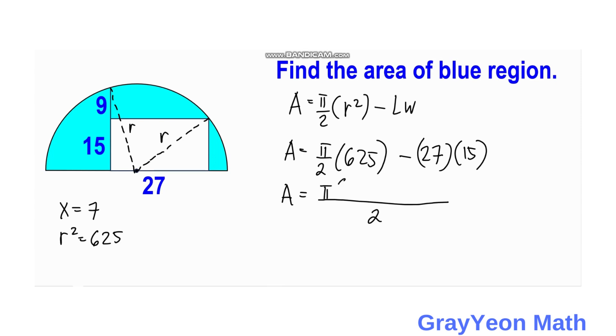Then we have Pi times 625 minus 27 times 15 times 2. And this would give us the area of 625 Pi minus 810 over 2 square units. And that is our answer.